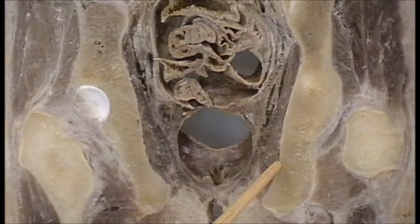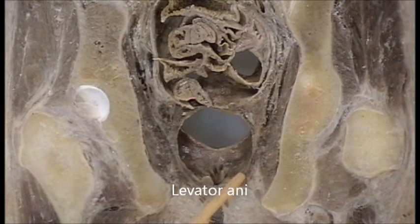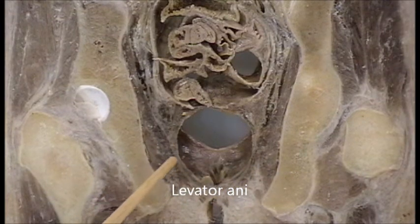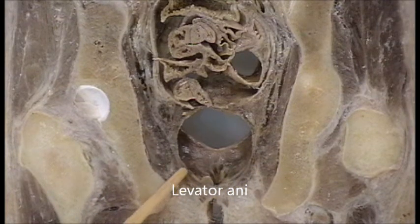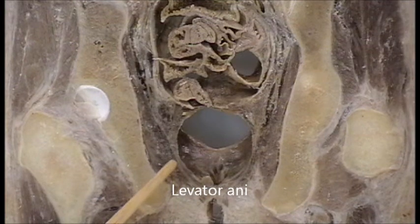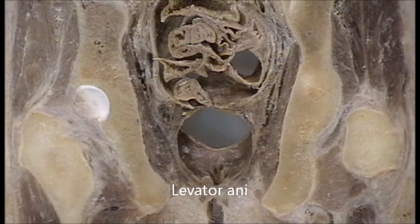Medial to the obturator internus we can see the very thin layer of muscle on both sides — that is formed by levator ani. This is the pelvic diaphragm, which is mainly formed by levator ani.